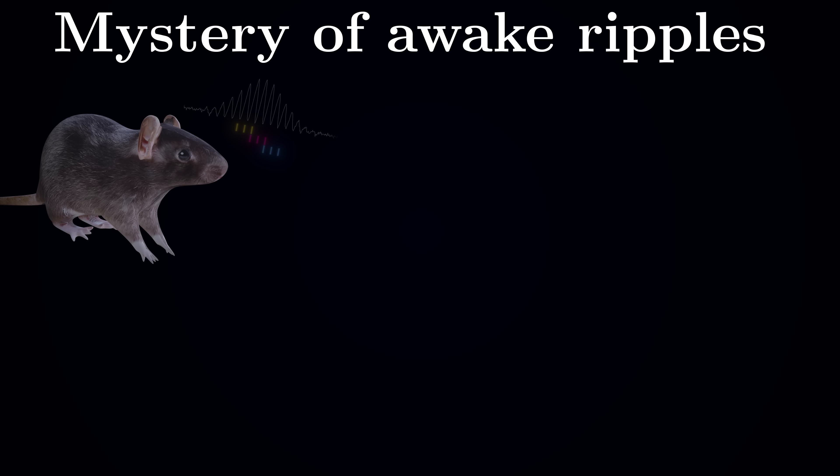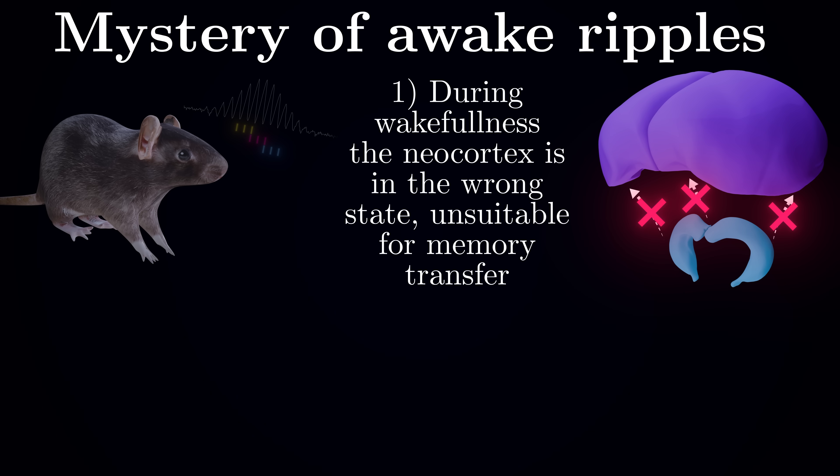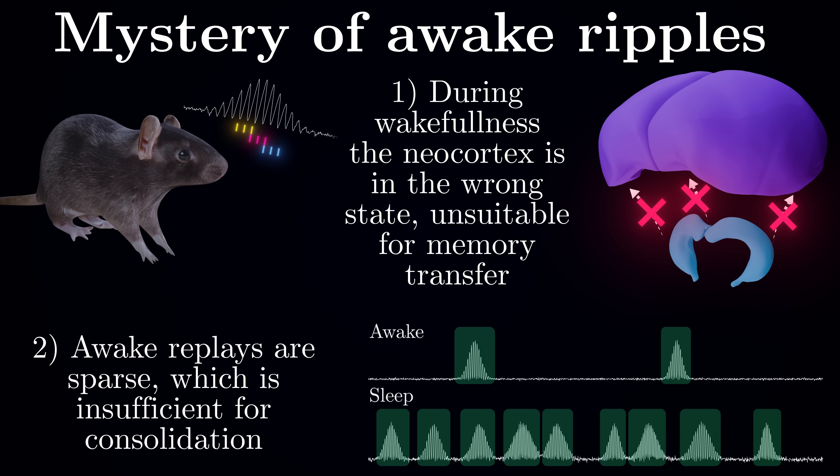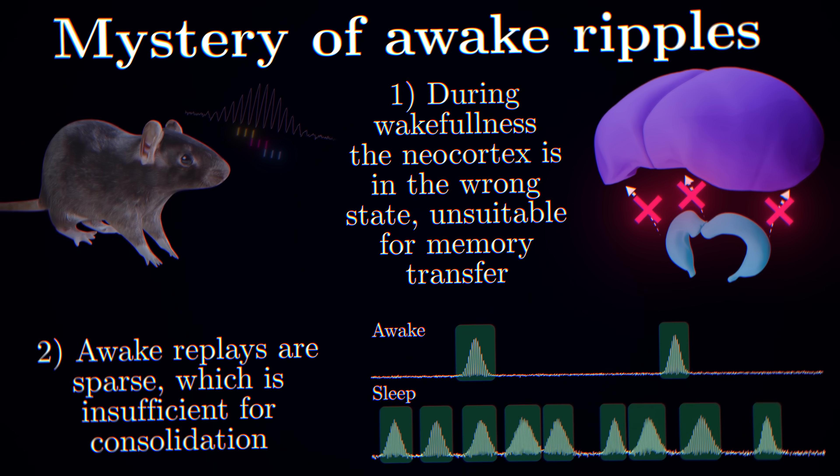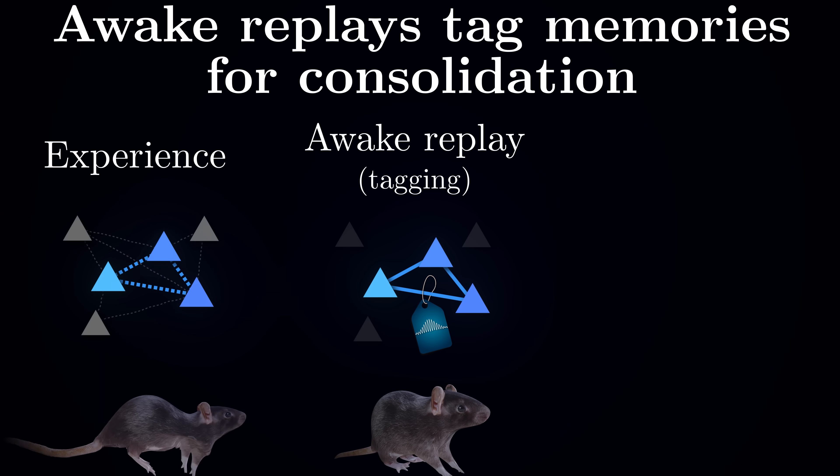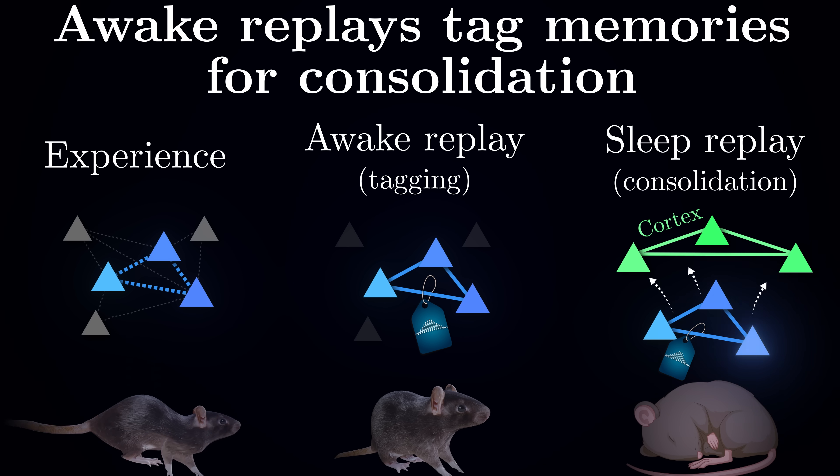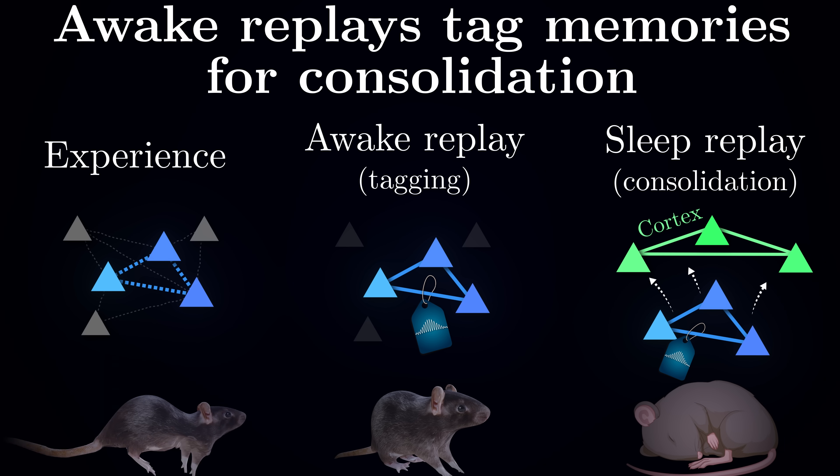Scientists had previously observed sharp wave ripples and associated replays during waking states, particularly during brief periods of rest or immobility. But these awake ripples were puzzling. Why would the brain replay memories when the neocortex isn't ready to store them? And also, the frequency with which such awake replays occur is much lower than in sleep, which is probably insufficient as proper consolidation requires more repetitions. It turns out that these awake replays serve as memory bookmarks. When they occur right after important events, they tag specific experiences for priority consolidation during sleep.